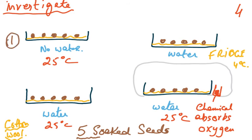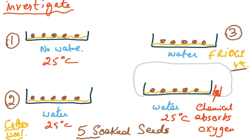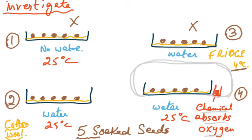The first petri dish has no water but is kept at 25°C. The second has water and is kept at 25°C. The third has water but has been kept in the fridge at 4°C. The fourth petri dish is enclosed in a clear plastic bag with a small beaker containing a chemical that absorbs oxygen, so there is no oxygen present.